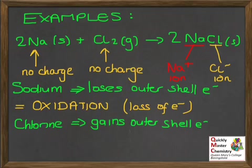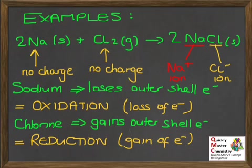What about the chlorine? Chlorine, group 7, non-metal, gains an electron for each atom to fill the outer shell. So the chlorine atoms in Cl₂ have gained electrons to make Cl⁻ ions. Gain of electrons is reduction, so we can say that the chlorine has been reduced.